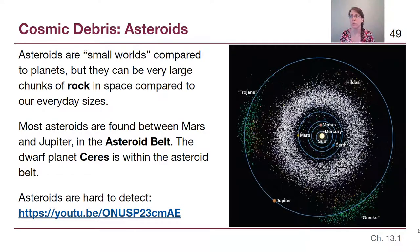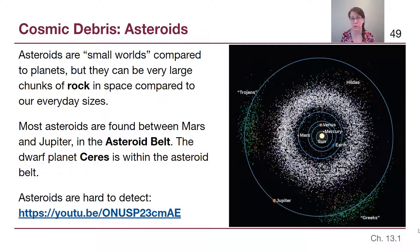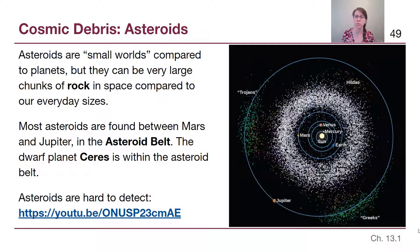When we use 'big' and 'small' in astronomy, it can be hard to understand what we really mean. These are chunks of rock smaller than Earth, certainly, but larger than houses — larger than what we'd think of as big on everyday scales. Most asteroids are found between Mars and Jupiter in what's called the asteroid belt.